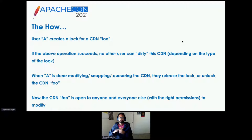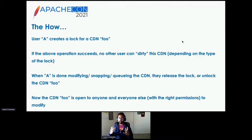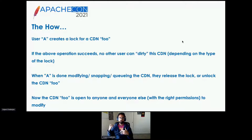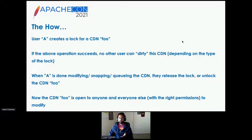A user goes into Traffic Portal and just grabs a lock on a particular CDN. It gives you a list of options: what's the CDN name you want to have the lock on, what's the message, and what kind of lock you want. If getting the lock on a particular CDN goes through successfully, then you're sure that nobody else can come in and make changes or dirty your CDN. Once the user is done changing the CDN or snapping or queuing, they just release the lock and it's open to anybody else to grab.